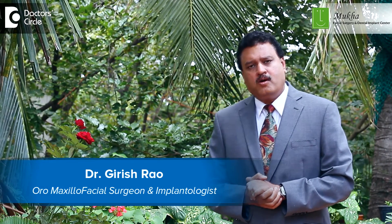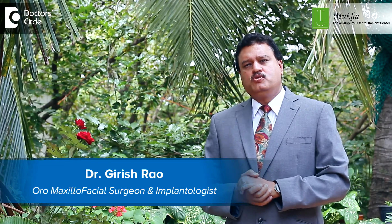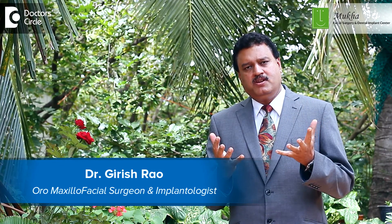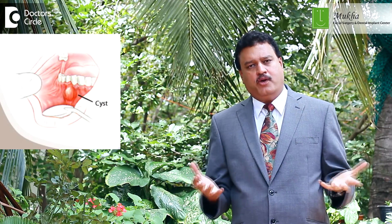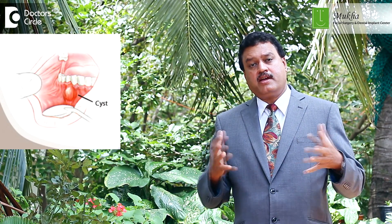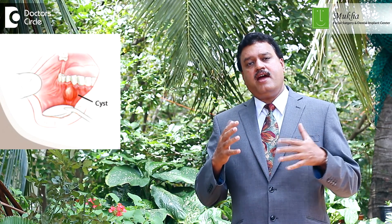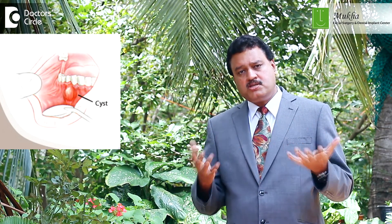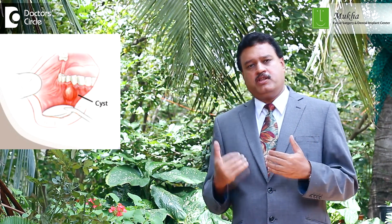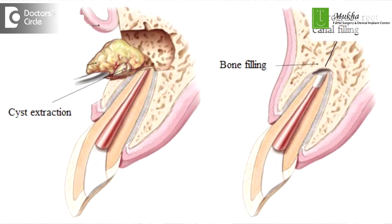Jaw cysts and tumors are quite common. A jaw cyst is a bag of skin inside the bone which is full of fluid. A cyst can expand and eat away your bone. It can be in the upper jaw or the lower jaw, and it's usually associated with either an infection related to a tooth, or a developmental condition where a tooth is not erupting — it's stuck inside — and the covering on that tooth multiplies and starts forming a cyst.